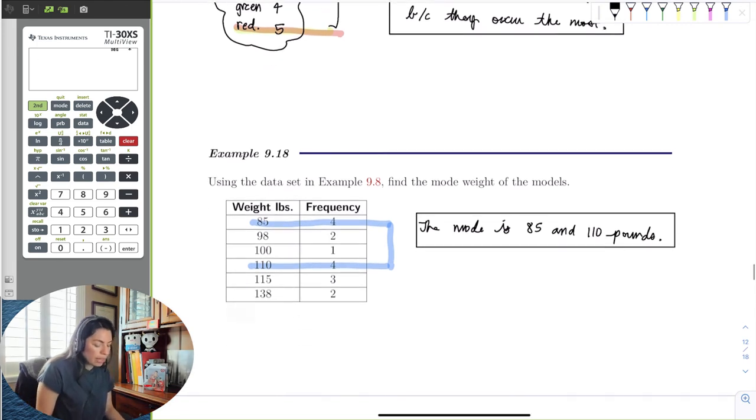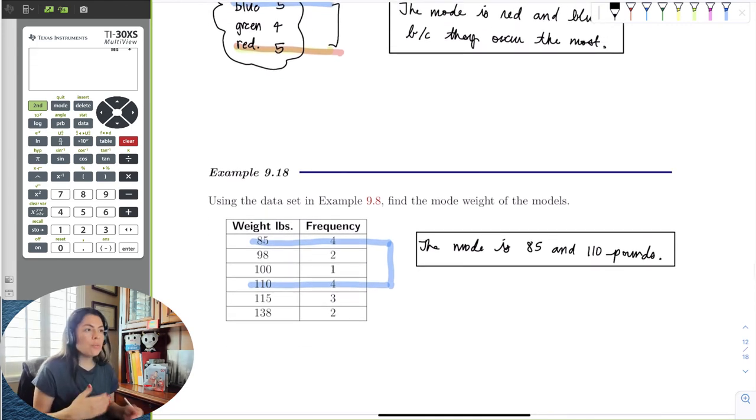Recall that if there were data that only occurred once, right? So 1, 2, 3, 4, 5, 6, 7, 8, 9, 10. No number repeated itself in your set of data, then you would have no mode.